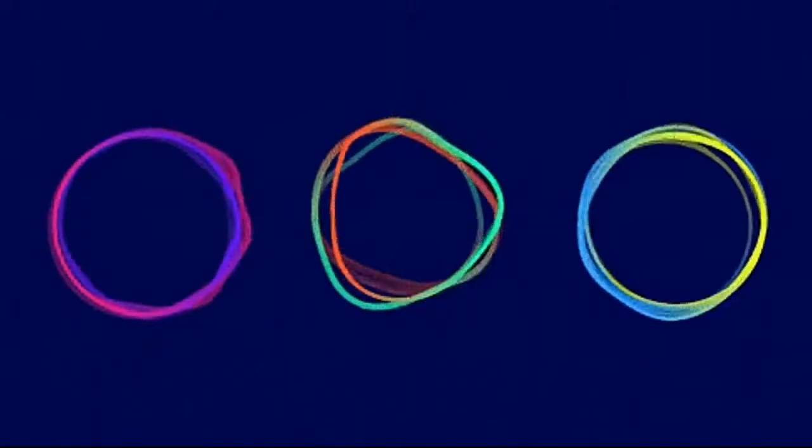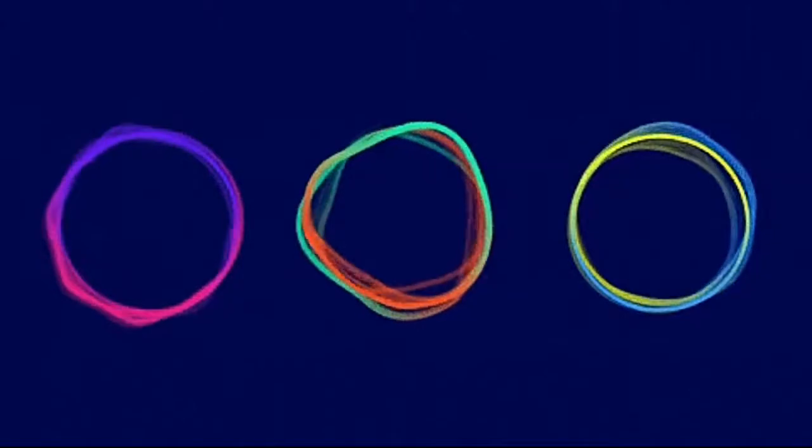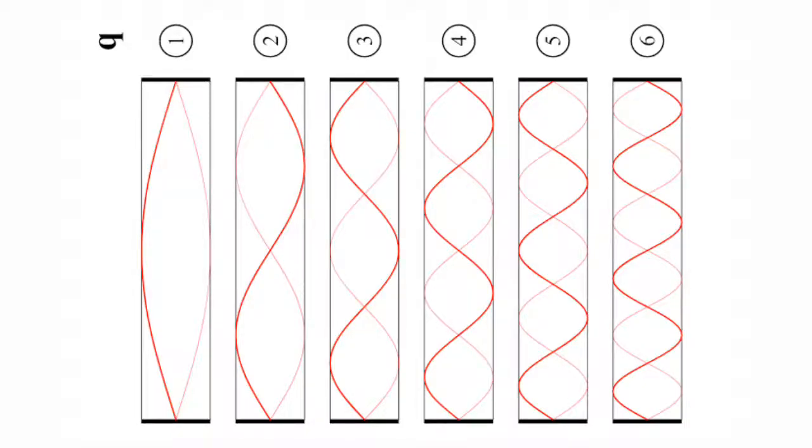But we will use the fact that it is quantized to find the number of dimensions. So let's imagine there is a string. Now if you pluck in one direction, it will vibrate at a frequency of one. And if you pluck at two directions, then it will vibrate at a frequency of two. And in N directions if you pluck, then it will have a frequency of n.